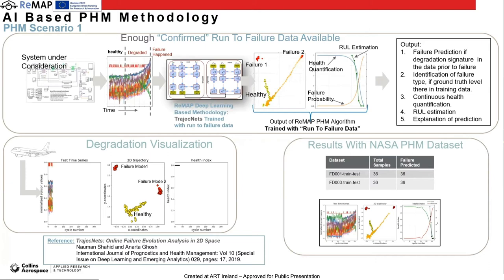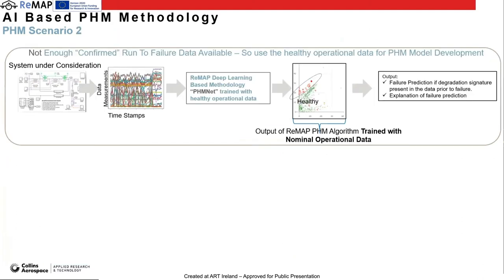PHM Scenario 2 applies when run-to-failure data is not available — for example when an aircraft has just started flying and there haven't been many failures. In those scenarios, we train the core machine learning model with healthy data only. We also updated the Project Next framework to a new deep learning methodology we call PHM Net. It also embeds the time slice in the time series data coming from the equipment under consideration.